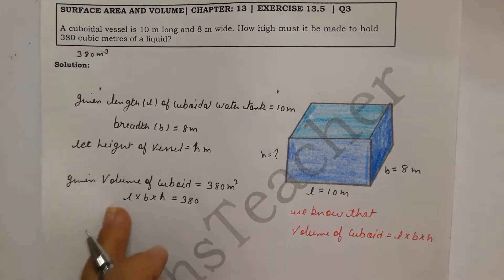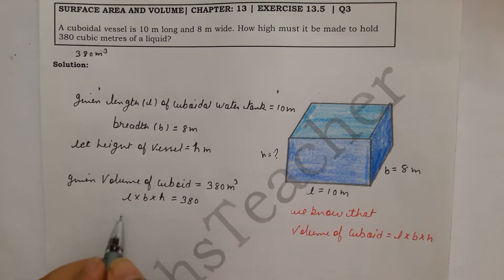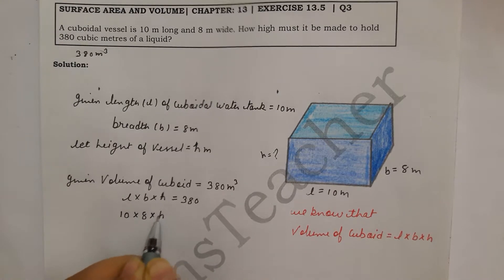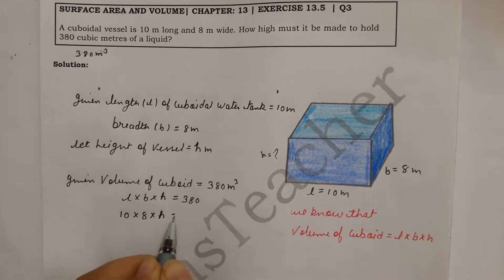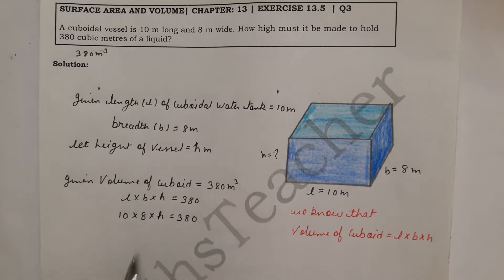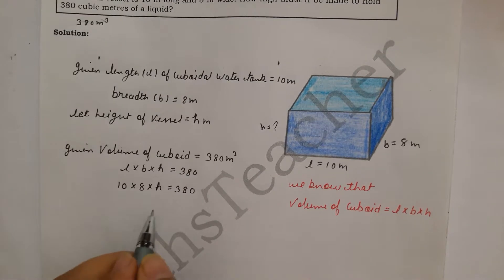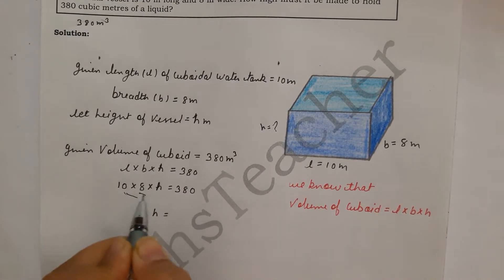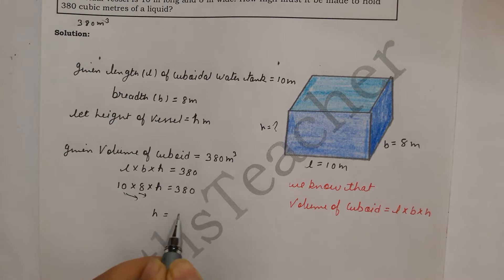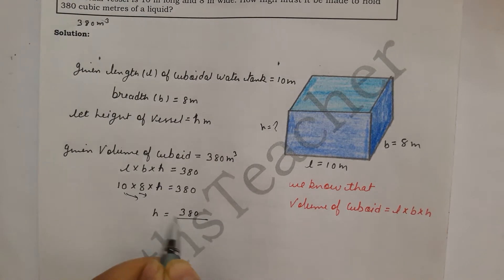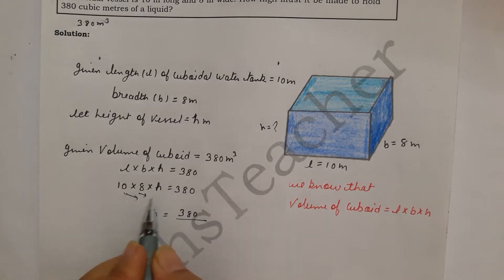We put in the values: L is 10, breadth is 8, and h is what we need to find. So: 10 into 8 into h equals 380. We transfer 10 into 8 to the denominator to find h, putting 380 in the numerator.